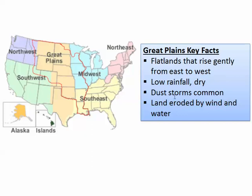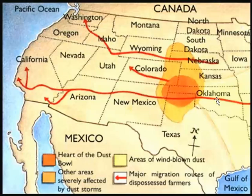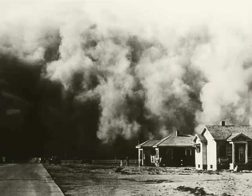Characteristics of the Great Plains included flatlands, low rainfall, dry conditions, and dust storms were common. The land was eroded by wind and water. The hardest-hit area was Kansas, Oklahoma, Texas, New Mexico, and Colorado, but dust was blown all the way to the West Coast. The people in that area, especially the 'Okies' from Oklahoma, got out and headed on Route 66 all the way to California.